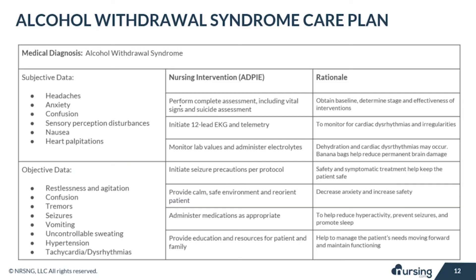Our last intervention is to provide education and resources for the patient and family. This is so important — you need to help this patient for moving forward. What's going to happen when they leave the hospital? It's scary and it's hard for them. It's so hard to stop drinking for good, and they need that support and guidance.